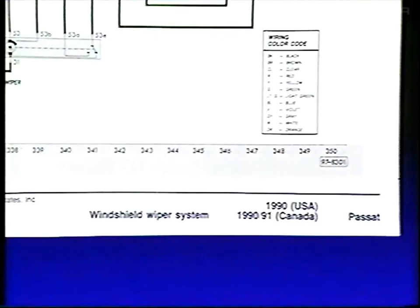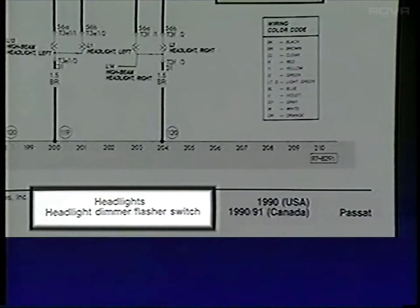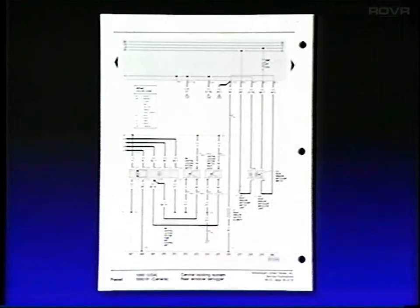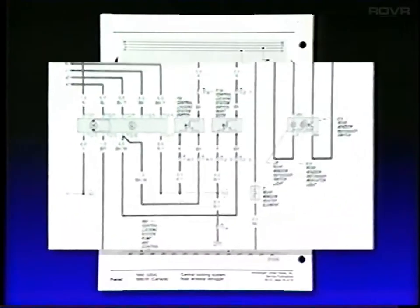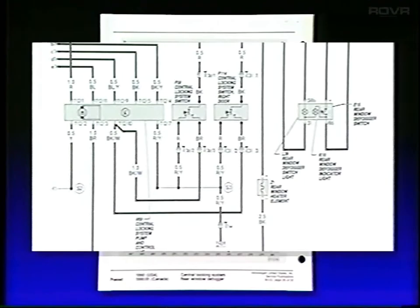You'll also notice the name of the electrical circuits on the bottom of each page. The wiring diagrams are arranged so that the electrical circuits and systems are placed individually within the diagram. This is done to make things less confusing because you normally work on one circuit or system on the vehicle at a time.